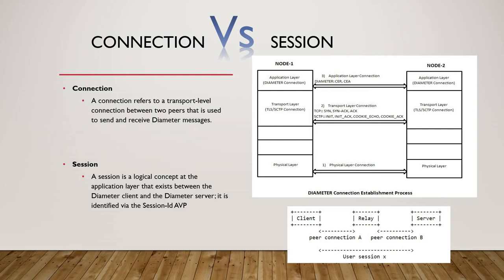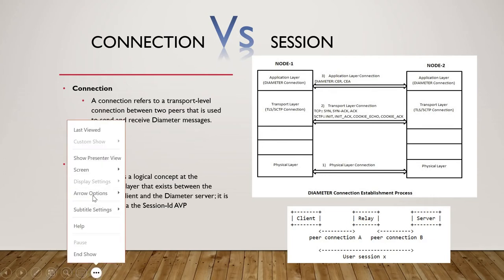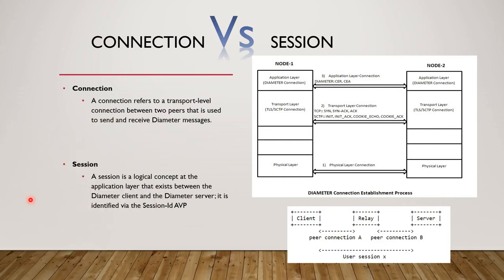A connection refers to a transport-level connection between two peers used to send and receive Diameter messages. At the transport layer we can use either TCP or SCTP — both cannot be used simultaneously. TCP stands for Transmission Control Protocol and SCTP stands for Stream Control Transmission Protocol.